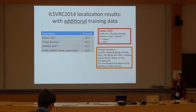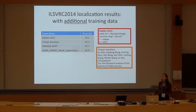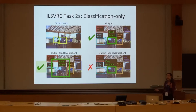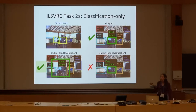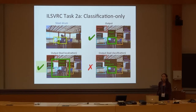This year we didn't officially have a classification challenge — a lot of teams talked about it and many still participated in that task. But it was not part of the official challenge. I call it Task 2A, classification only. Every team had to submit results in the format of classification plus localization — guessing a class label and a bounding box. But when evaluating the classification-only metric, we also considered a correct class with bad localization to be correct.